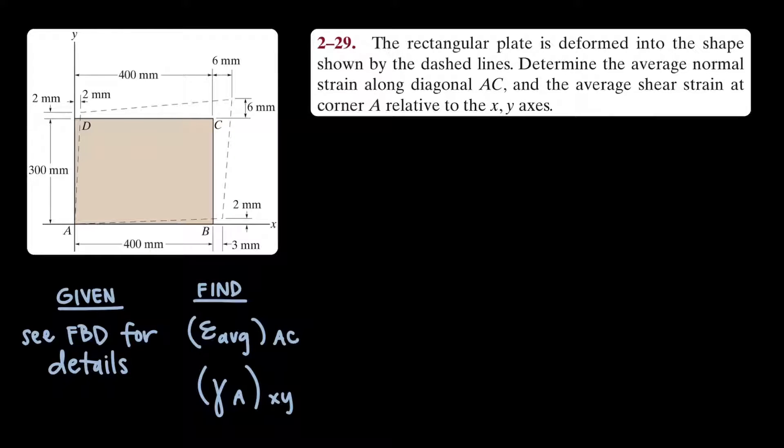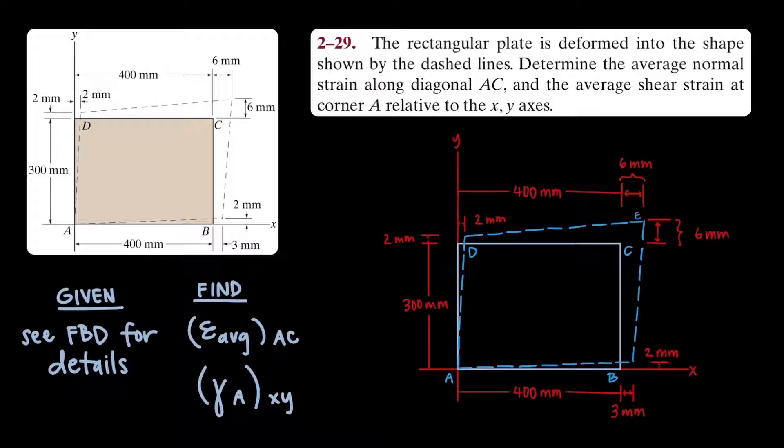Our first step is to draw the free-body diagram of the plate. You can see that the original plate is shown in the pale blue color, while the deformed plate is shown in the sky blue color.